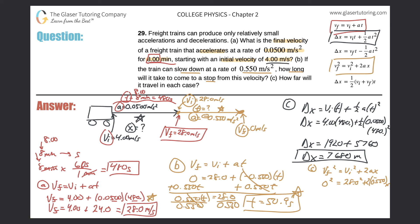Take 28 and square it — that gives us 784. So we get zero equals 784. Now this is going to be minus two times 0.55, which is minus 1.10 times X. Add the 1.10X to both sides — that cancels that term — so 1.10X equals 784.